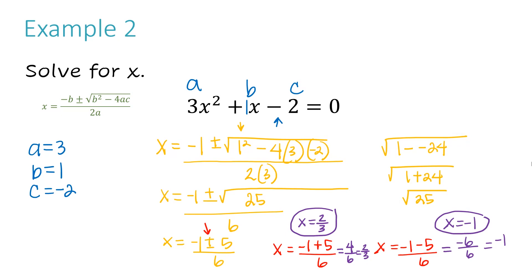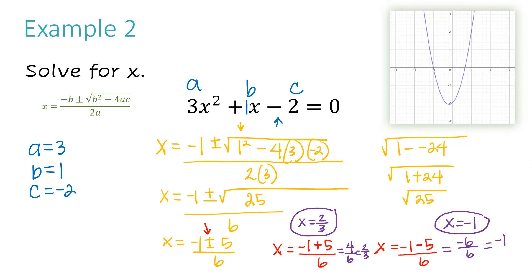Now if I want to check to see if my answers are correct, I could graph this on a graphing calculator or make a table and make sure I have a place where y equals 0 so I can see what x would equal at that point. Basically we're looking for where the graph hits the x-axis. That would be right here, where x equals negative 1 — which is exactly what I have. The other intersection is over here; it's not quite at x equals 1, but it's a little more than where x equals a half. Two-thirds looks dead on as to where this graph is hitting the x-axis, so my answer is correct.